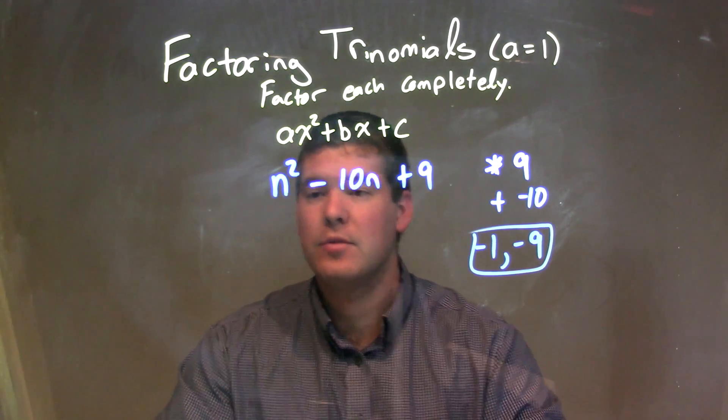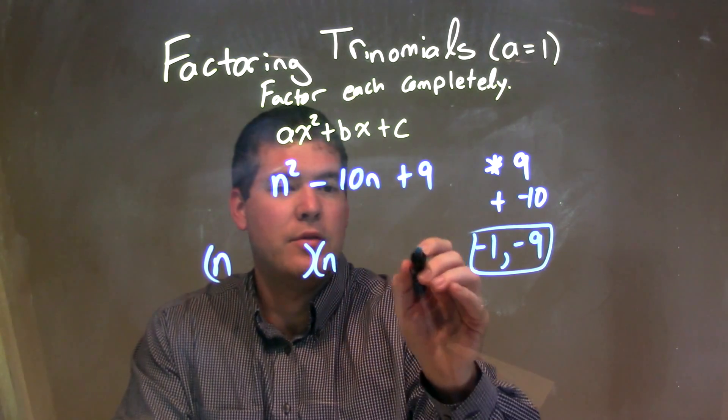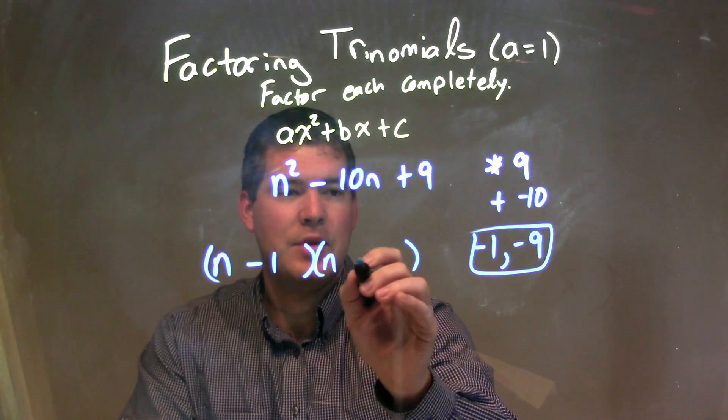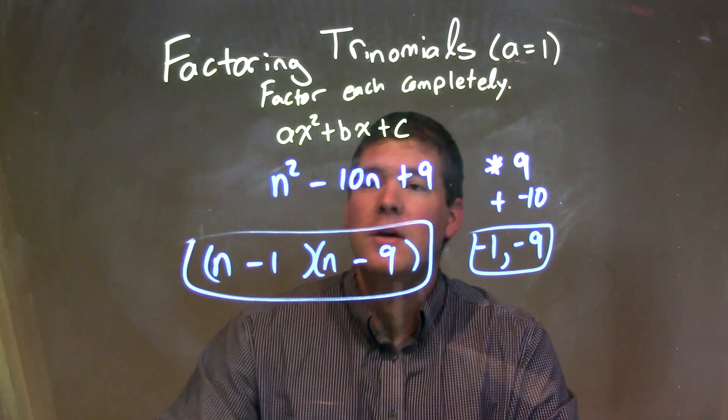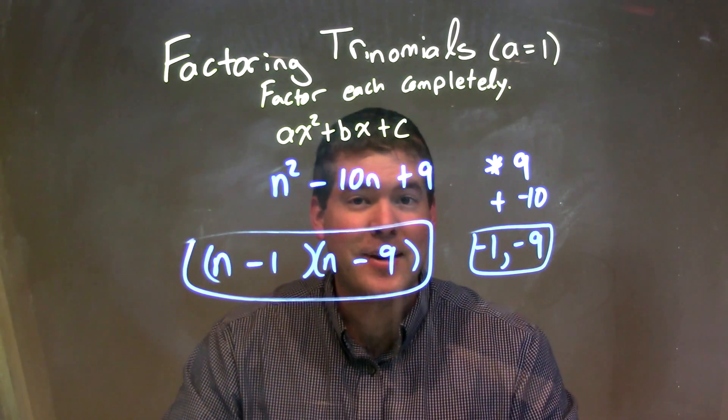Okay, so those are my key two numbers. So when I write this out, I have n, kind of wrote it down in two parentheses here, n minus 1, my first number, and then times n minus 9, and there we go. We've factored out our trinomials. We've got our final answer here, n minus 1 times n minus 9.